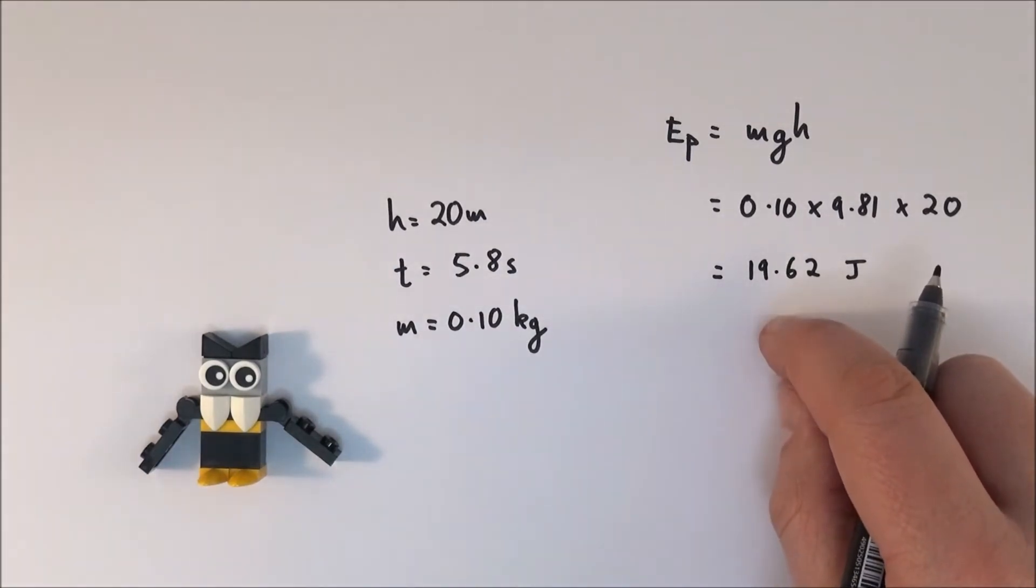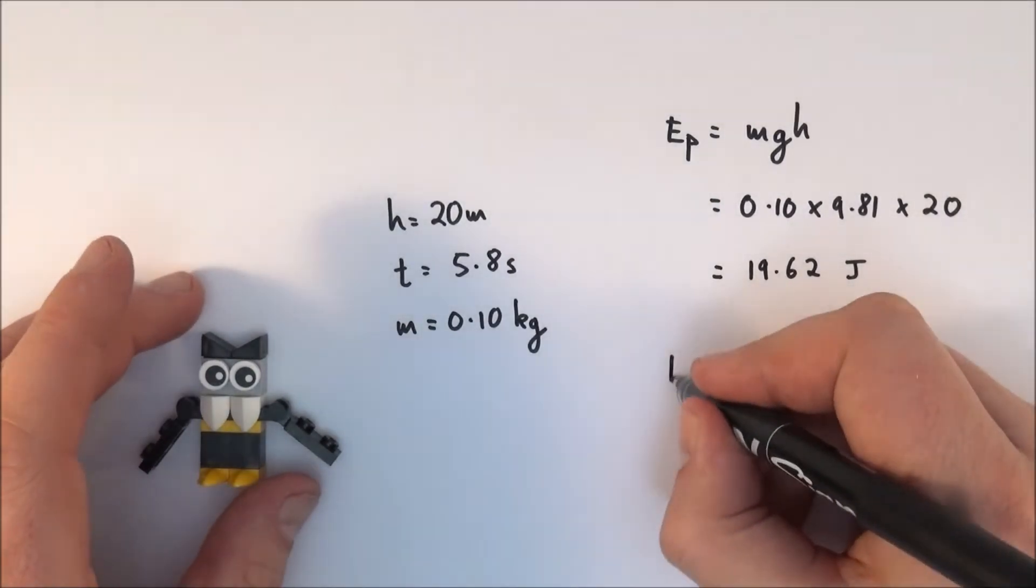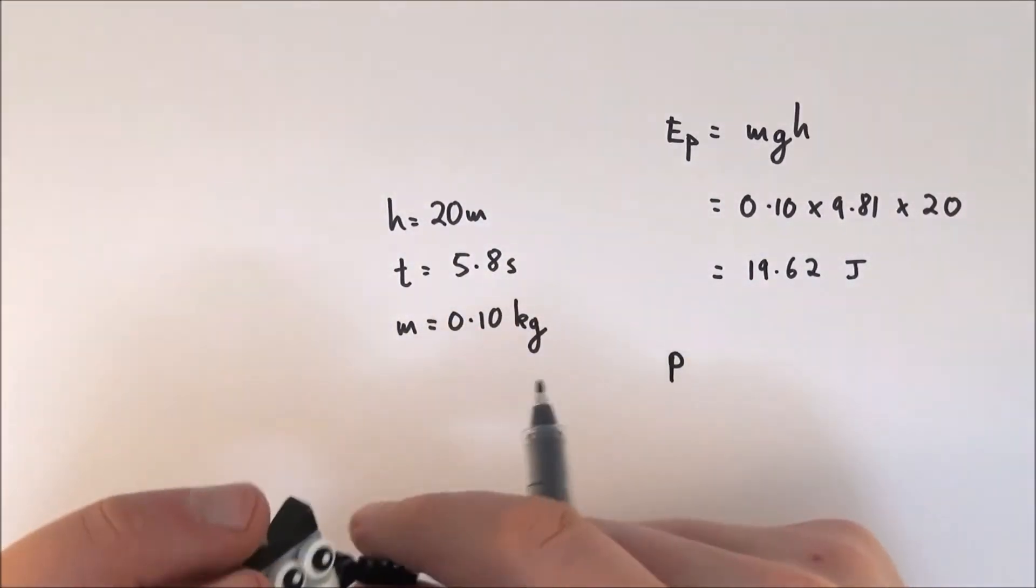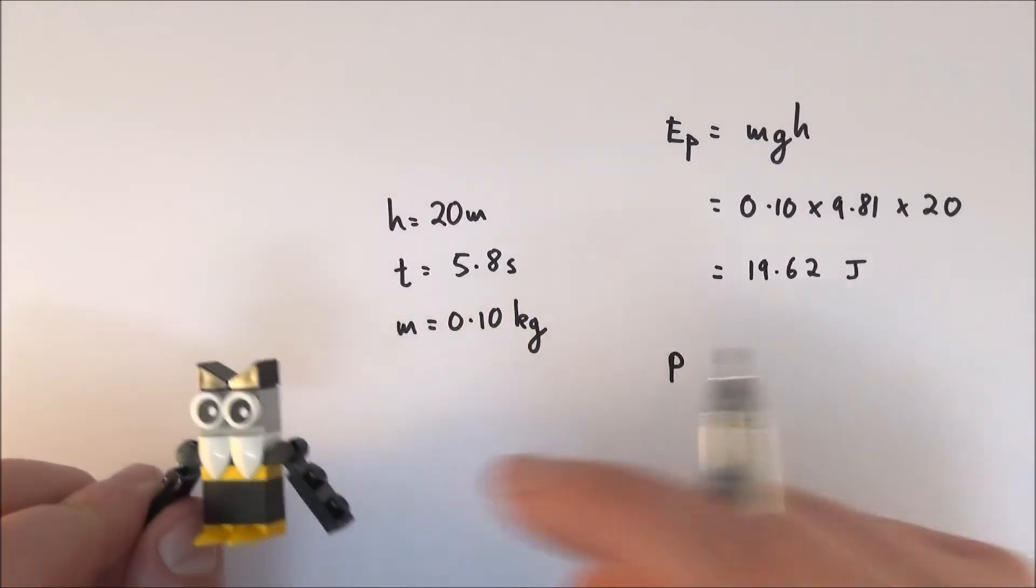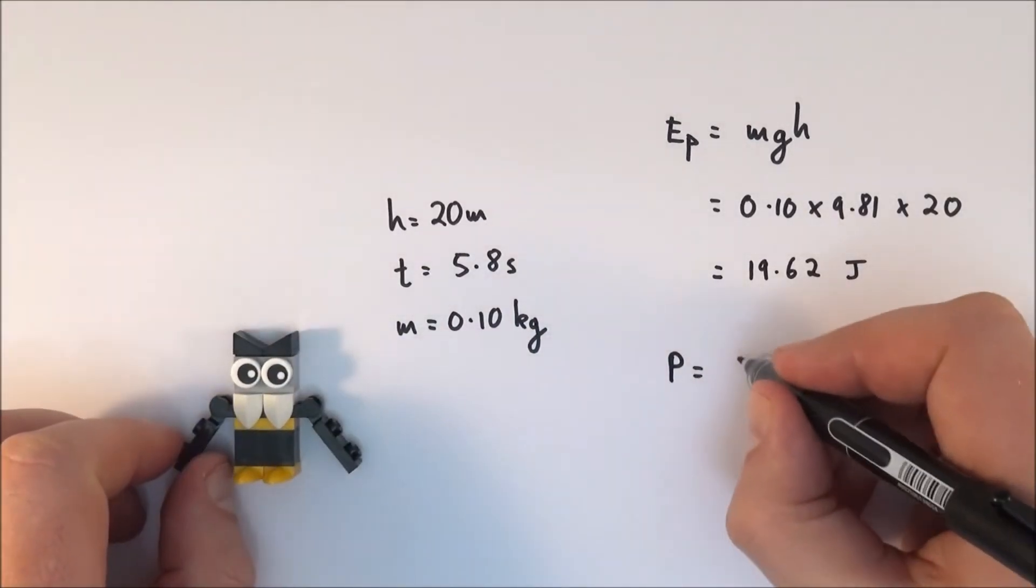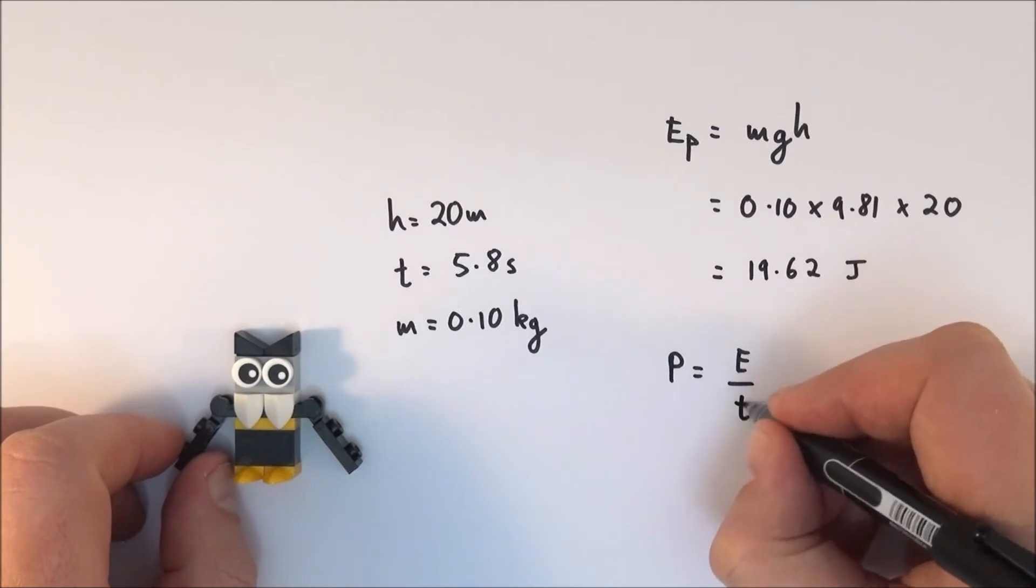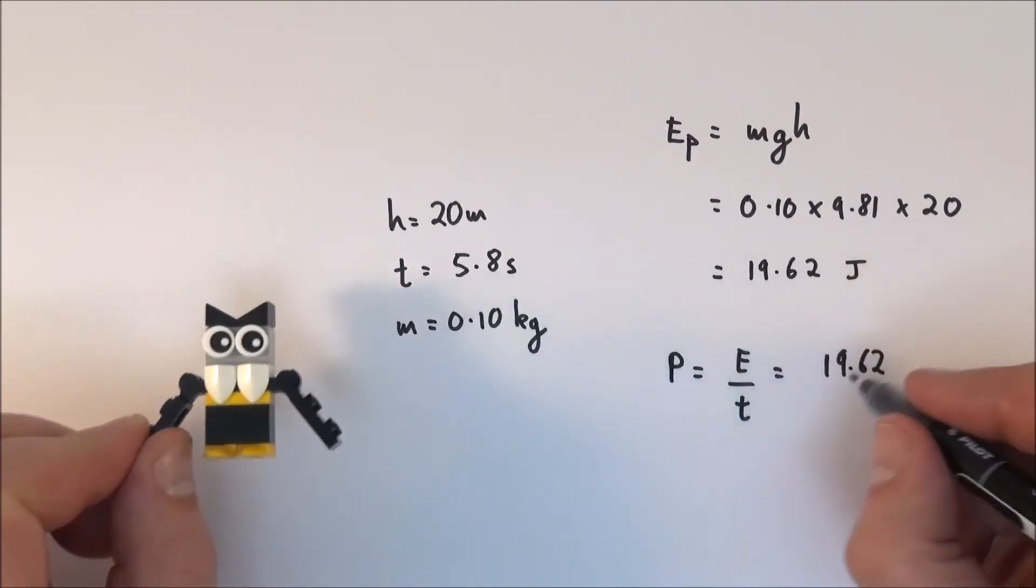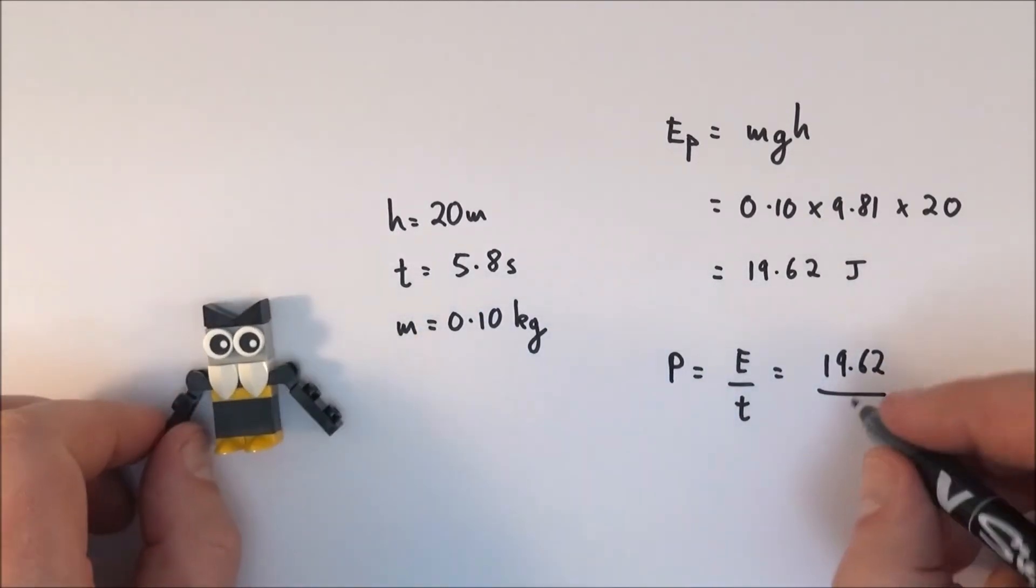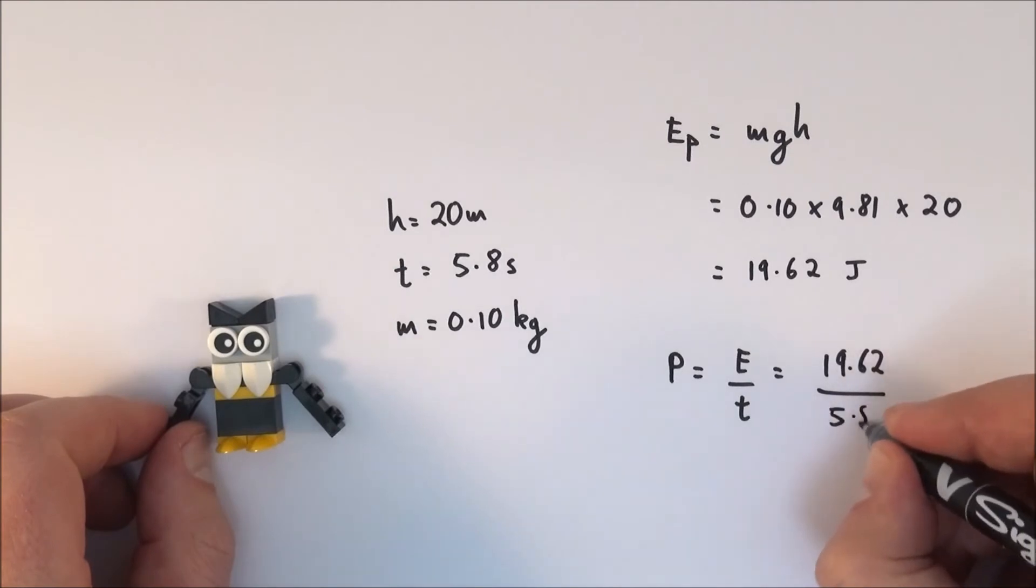What's the power of that bird? We're going to assume that it's working at a constant rate, so we're looking at the average power. The power is going to be equal to the energy transferred per unit time, which equals 19.62 - which is the amount of energy transferred, that's the work done by the bird against gravity - over the time of 5.8 seconds.